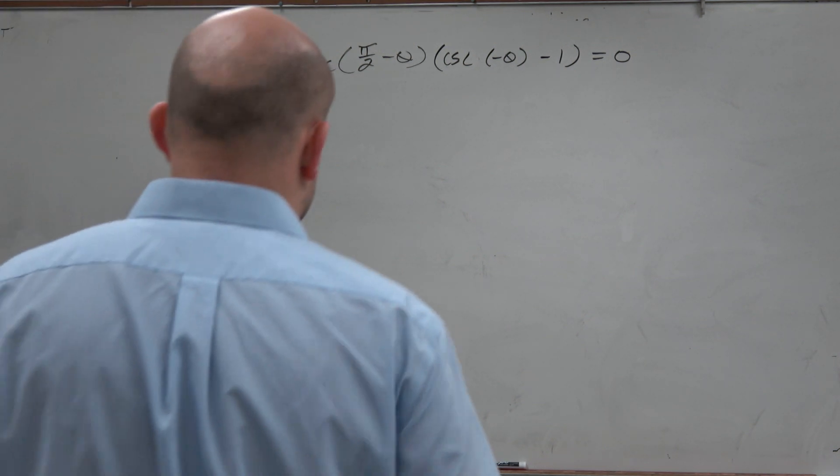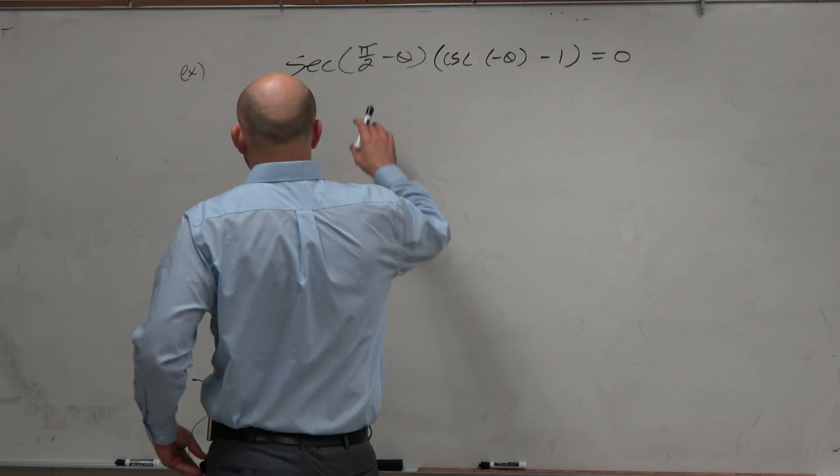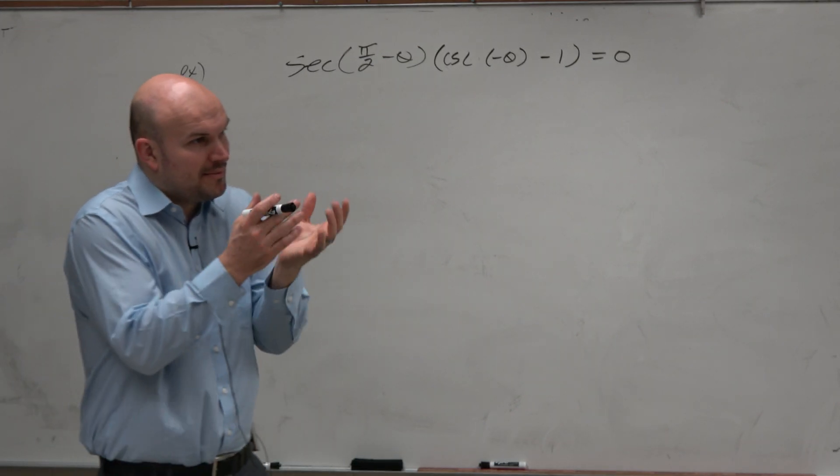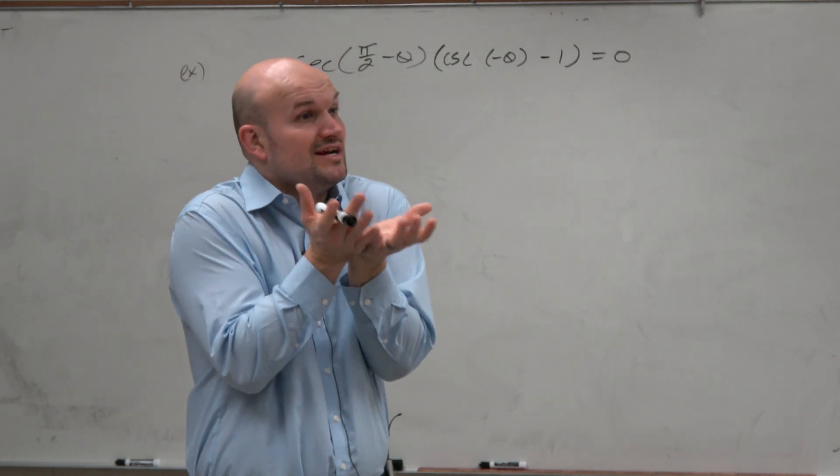The way that I remember these trigonometric identities is we have secant of theta minus, or pi halves minus theta. Remember, I think of these cofunction identities like transformational functions.